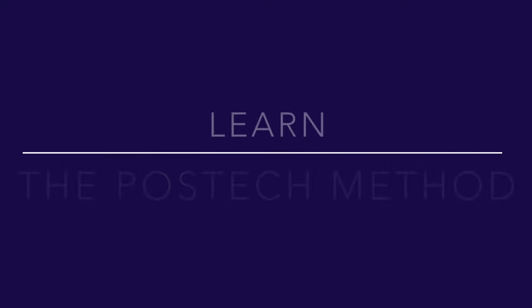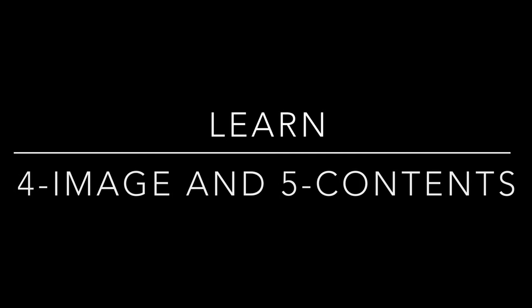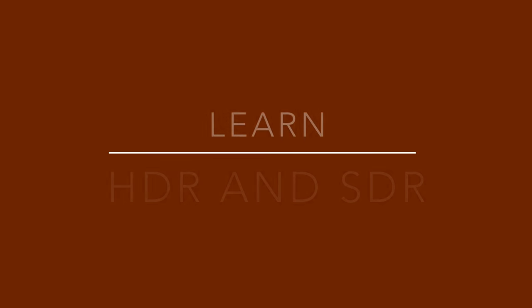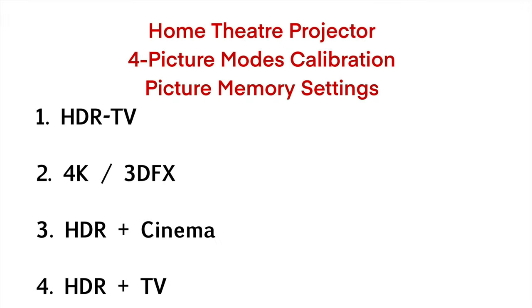Using the POST-TECH method, this calibration may apply to other 4K HDR projectors using the same principles and picture settings. In this video, you will learn the POST-TECH method, the 4 image calibration settings, the 5 current viewing content types, and maximizing viewing experience in HDR and SDR, including the difference between new and forced HDR contents. The 4 picture modes are: 1. HDR TV, 2. 4K or 3D FX, 3. HDR plus Cinema, 4. HDR plus TV.